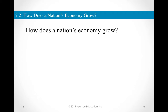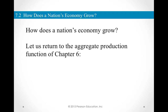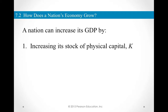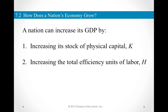We can now summarize our understanding of how a nation's economy grows. We have seen the production function where Y is real GDP, A is technology, and K and H are physical capital and human capital respectively. A country can grow by increasing its stock of physical capital K, or by increasing the total efficiency units of labor H. Both of these sources contribute heavily to a developing country's economic growth and catch-up growth rate. Improving technology A is the major source of growth for developed economies like the United States, United Kingdom, and other West European countries.